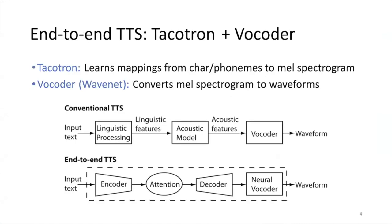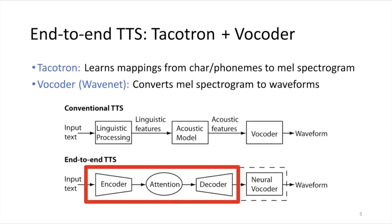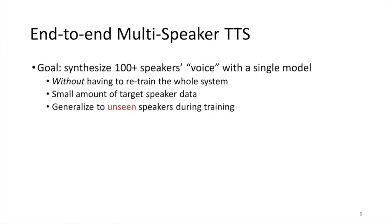Here's an overview of our end-to-end TTS. We're using a Tacotron and vocoder type setup. Tacotron learns mappings from characters or phonemes to a mel spectrogram — we are using phoneme input — and then a vocoder converts the mel spectrogram into waveforms. Different from a conventional TTS with separately trained modules, we have an encoder-decoder model with attention that we train all together, with a separate neural vocoder which is WaveNet. The goal of end-to-end multi-speaker TTS is to synthesize different voices of hundreds of speakers with a single model, ideally without retraining the entire system, and to generalize to unseen speakers not seen in the training data.